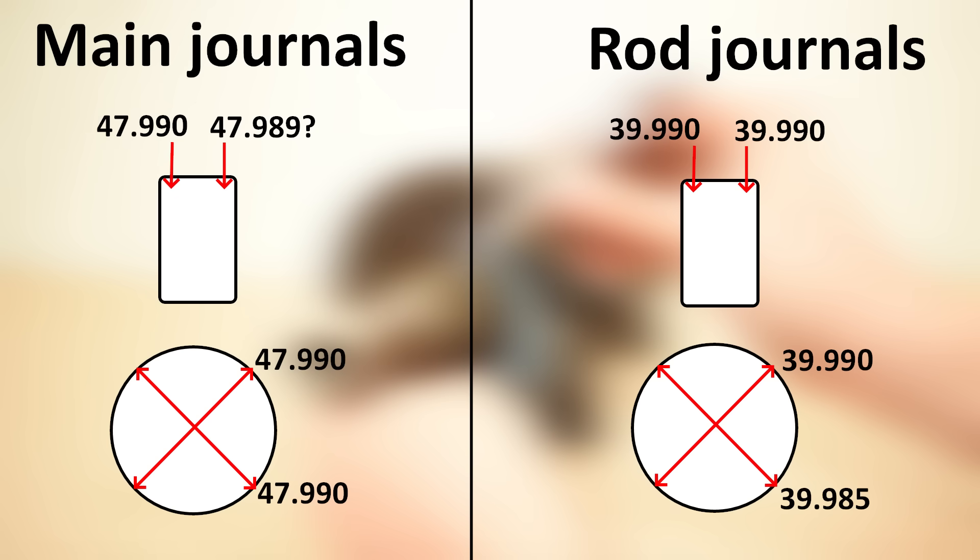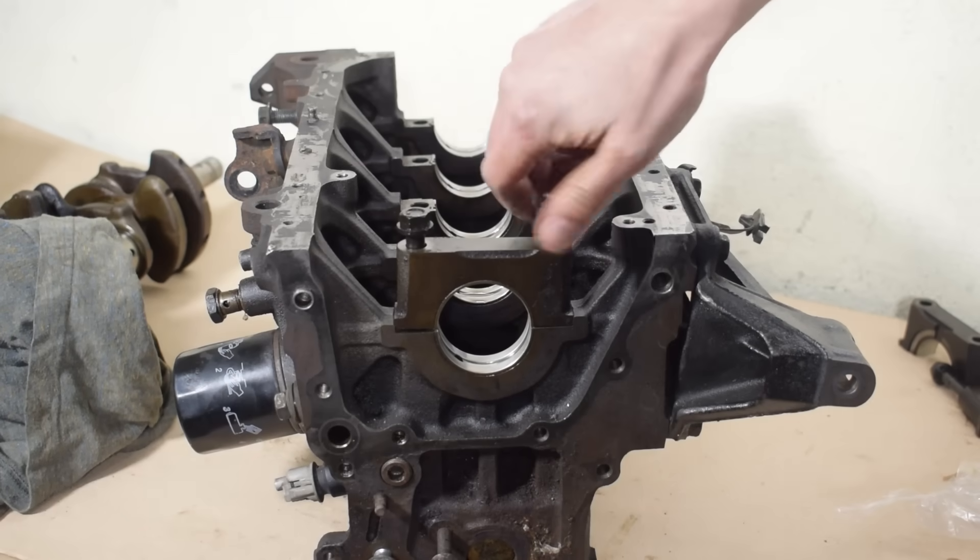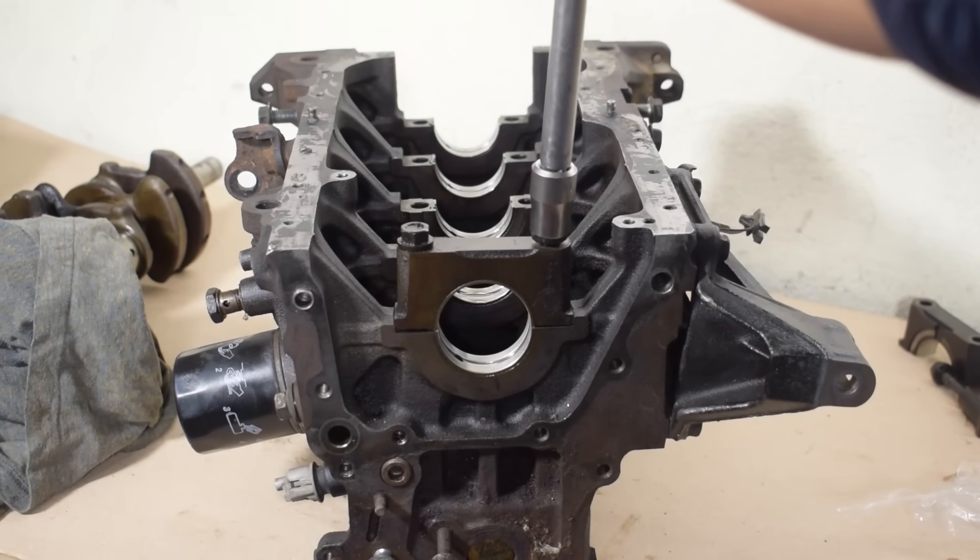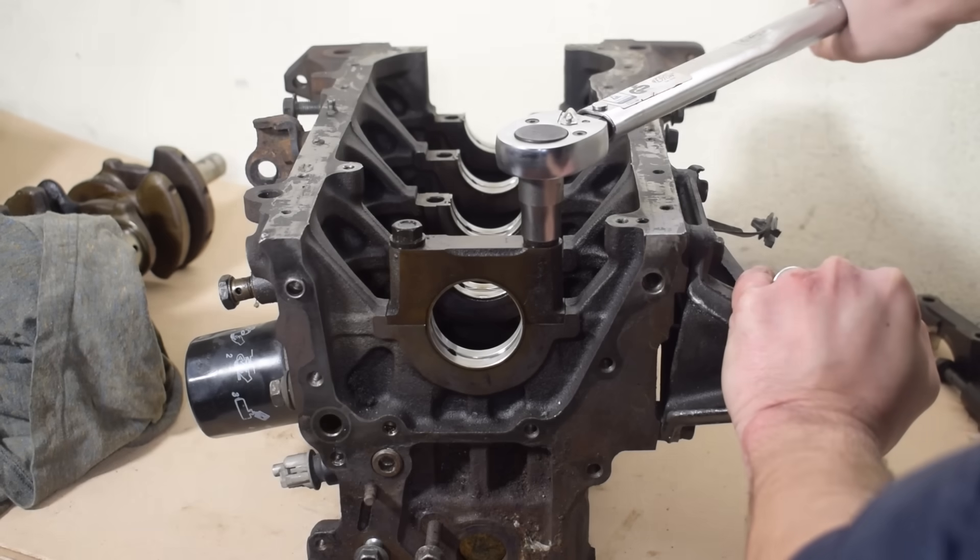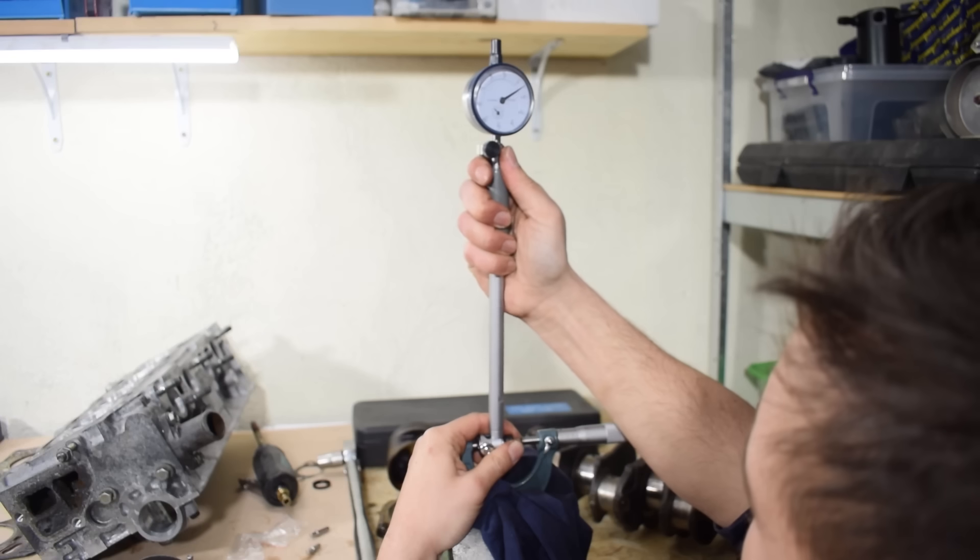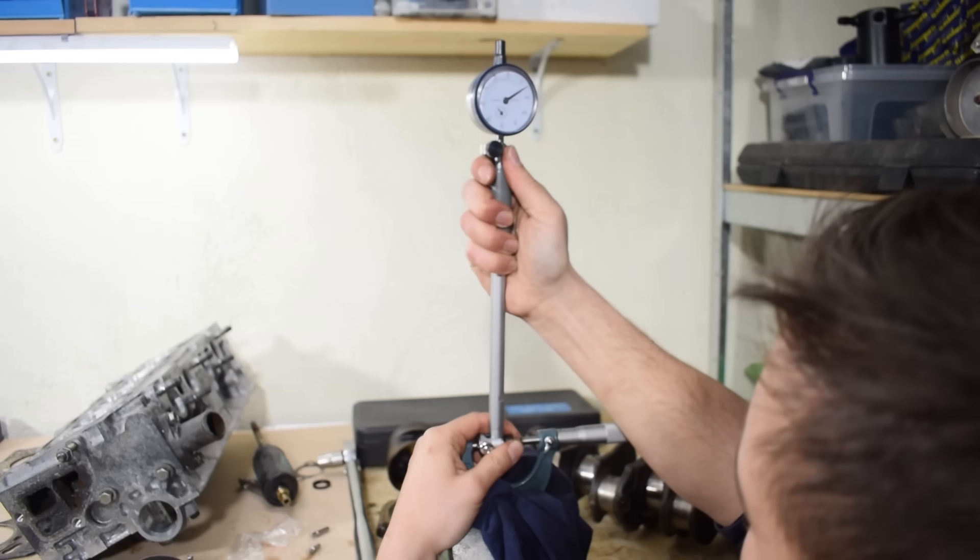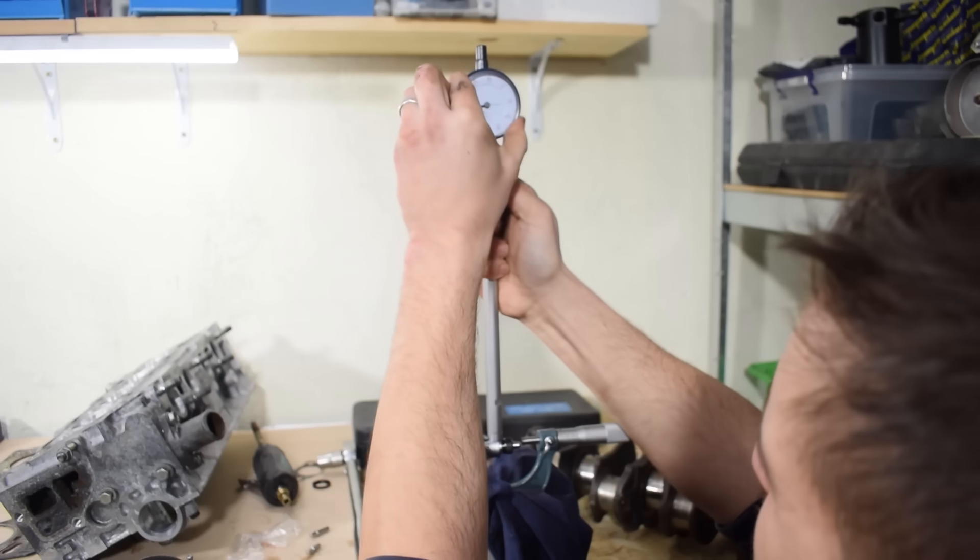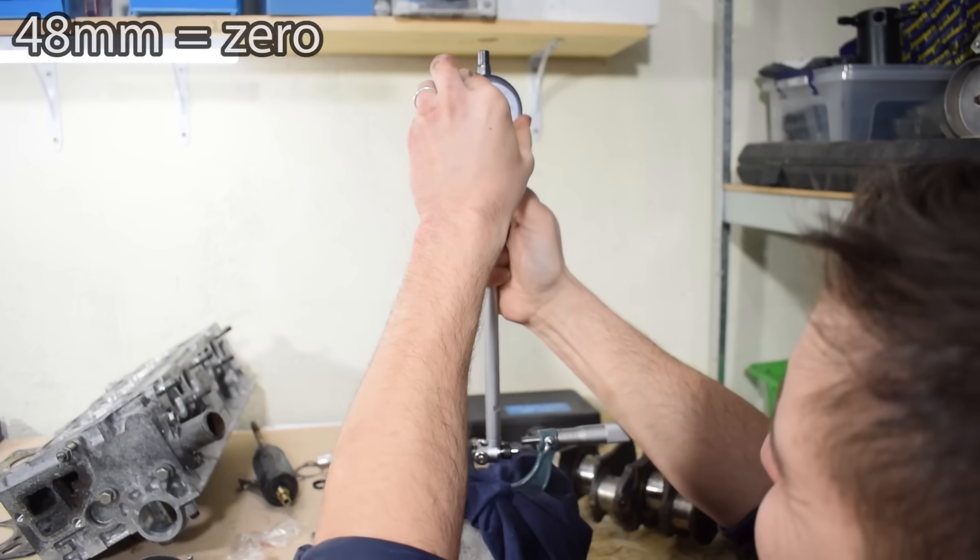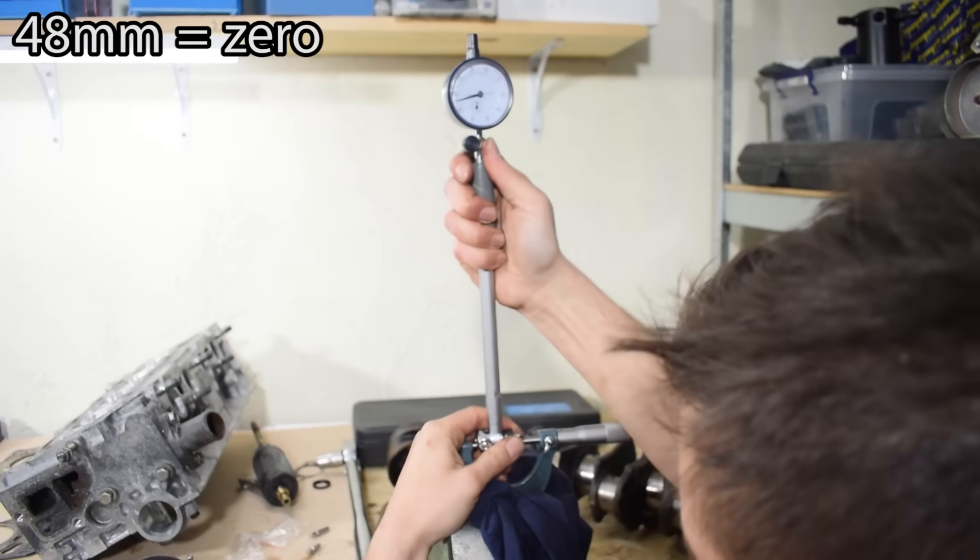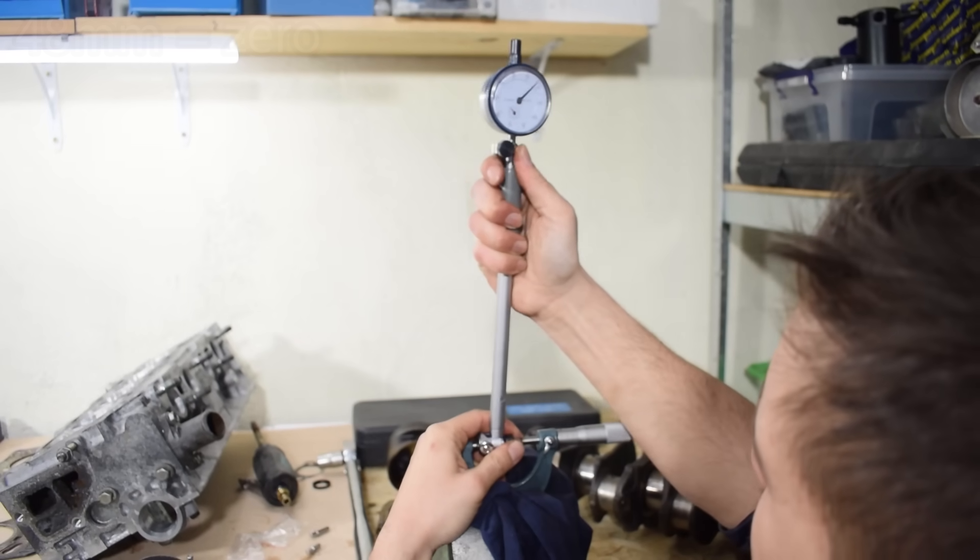Now that we have our journal dimensions, we can go ahead and measure our main and rod bearing bores. We're going to start with the main bearings. To do this, we obviously need to have the bearings installed and then we'll torque down the main cap using the correct torque specifications. After we have done that, we will zero our dial bore gauge. Since our main journal size is 48 millimeters, that's what we will set as our zero. Again there are detailed instructions on how to do this in my dial bore gauge video.